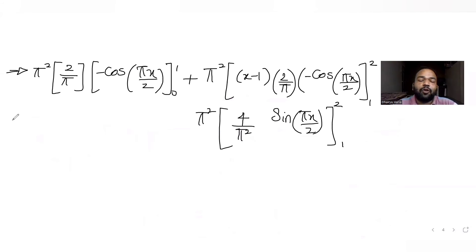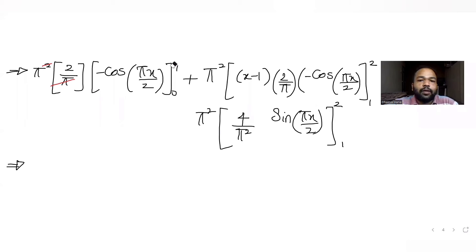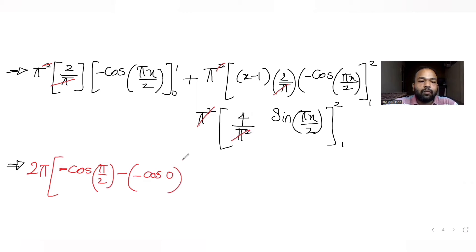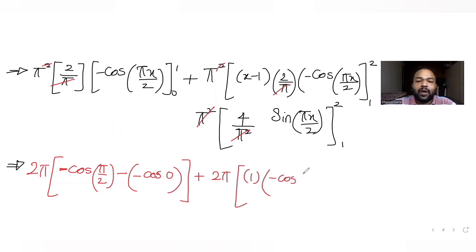Now let's substitute the values. After cancelling π, the first part gives: 2π times [−cos(π/2) − (−cos 0)]. Putting x = 1 gives −cos(π/2), and x = 0 gives −(−cos 0) = +cos 0. For the second part with limits 1 to 2: putting x = 2 gives (2−1) = 1 times (−cos(2π/2)) = −cos π, and x = 1 gives (1−1) = 0 so that term vanishes.